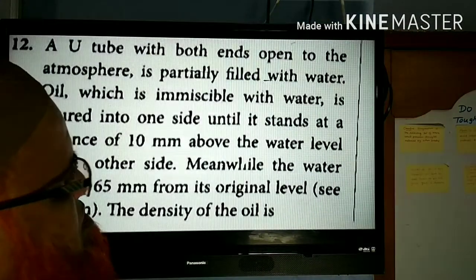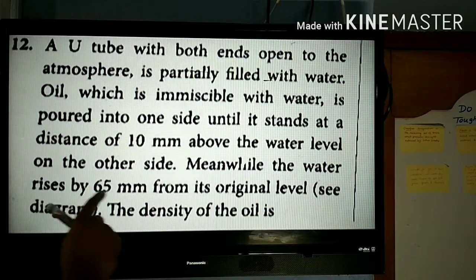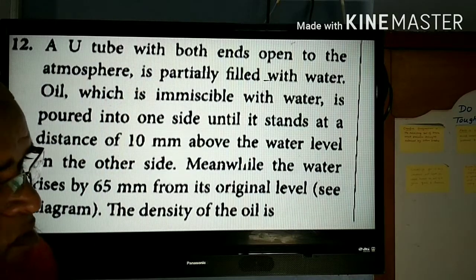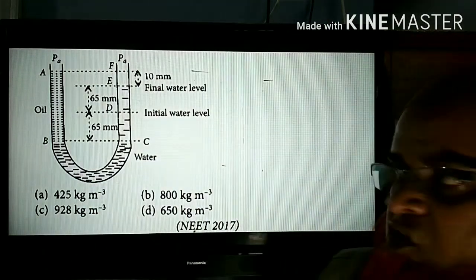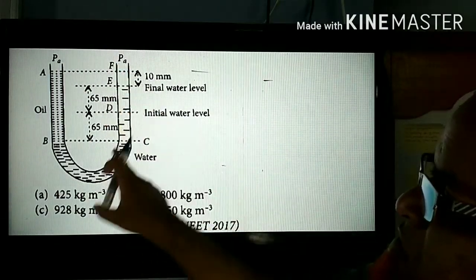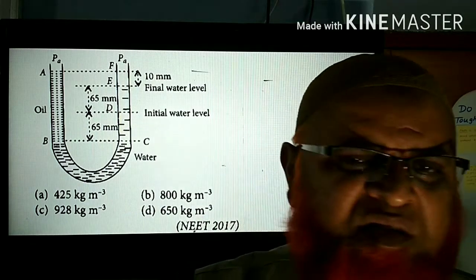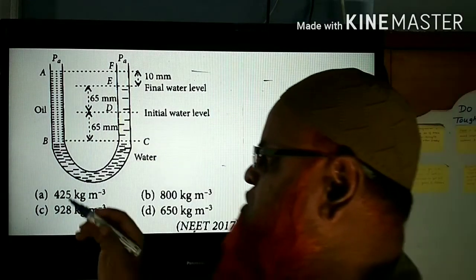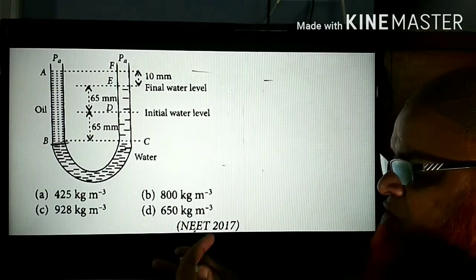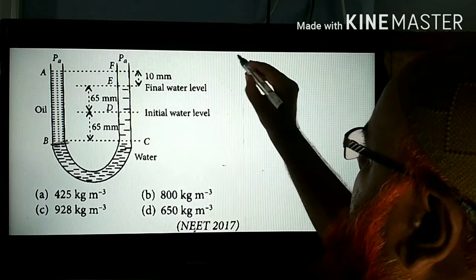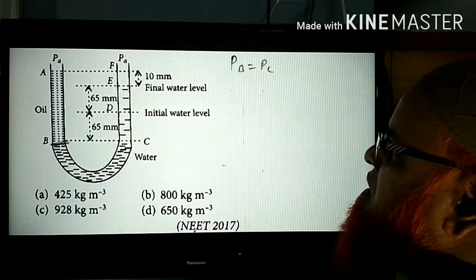This is the problem asked in 2017. It is a U-tube with both ends open and all dimensions are given — oil rises to 70 mm, and 65 mm dimensions are indicated. Looking at the diagram, one side is oil and the rest is water. You have to choose the interface point between the two liquids. Consider this interface point; then pressure at B equals pressure at C.